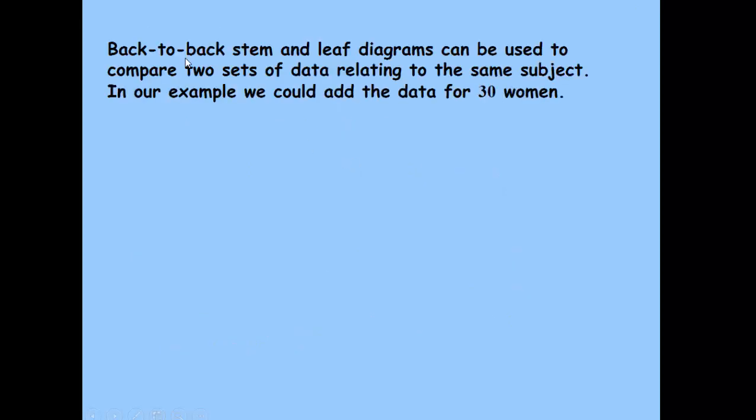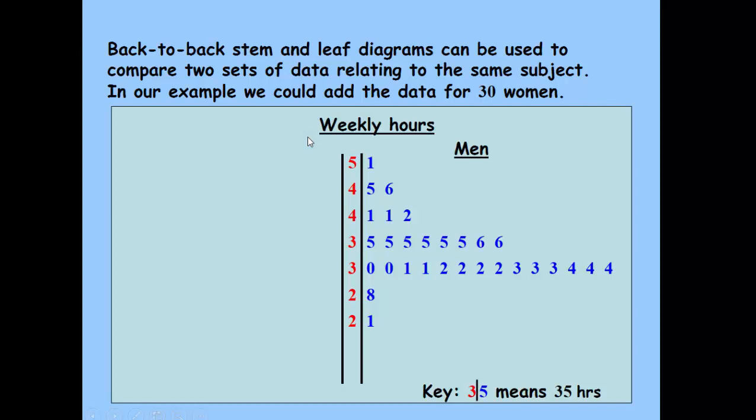We sometimes use what we call back-to-back stem and leaf diagrams. If we wanted to look at the weekly hours worked by men and women, here's our original data for men. Then we enter the data for women. We can then use them to compare, finding the median for both using the same stem. Each leaf represents one man or one woman.